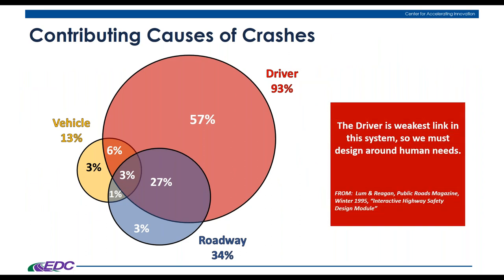Research on the contributing causes of crashes found that over 90% had some type of driver error. About one-third had a roadway contributing factor and about 13% had a vehicle contributing factor. As we saw in our poll, driver error is really the biggest issue — humans make mistakes and drivers are the weakest link. The question becomes: how do we address driver error through roadway improvements?